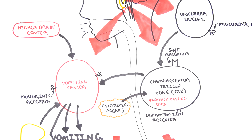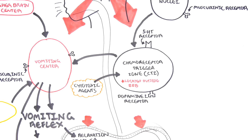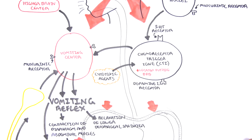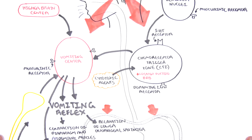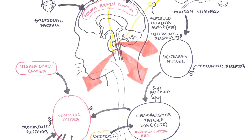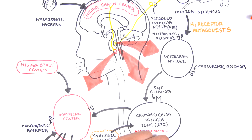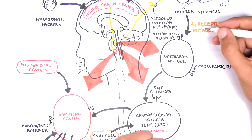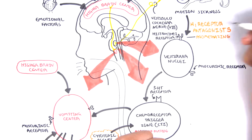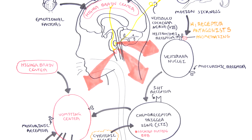That was the physiology of vomiting. Now let's talk about the medications used to treat, manage, and prevent nausea and vomiting in acute as well as chronic situations. These medications are also known as antiemetics, basically preventing emesis. The different classes of antiemetics include histamine 1 receptor antagonists, also called antihistamines, which include promethazine. As the name suggests, they block histamine 1 receptors specifically.